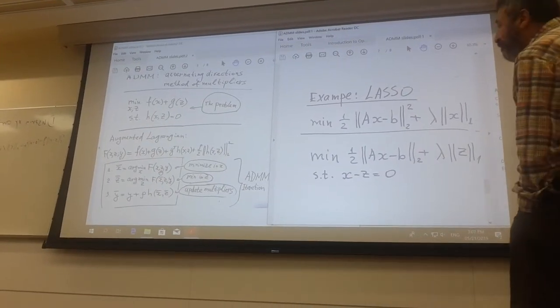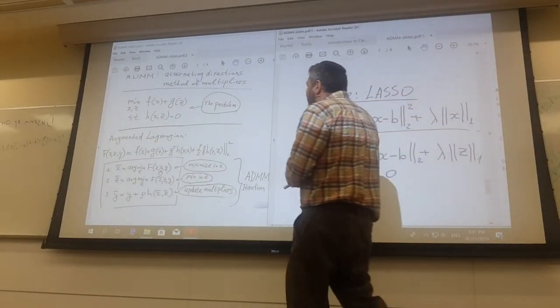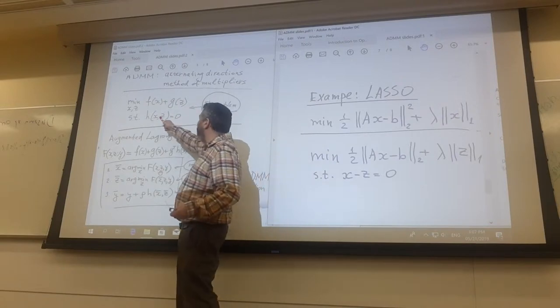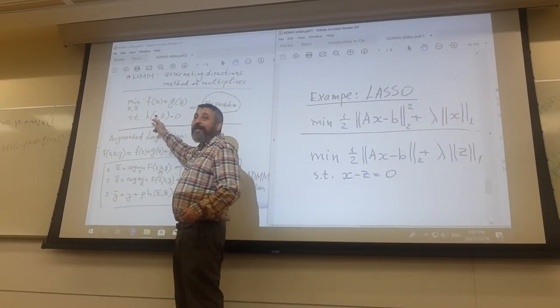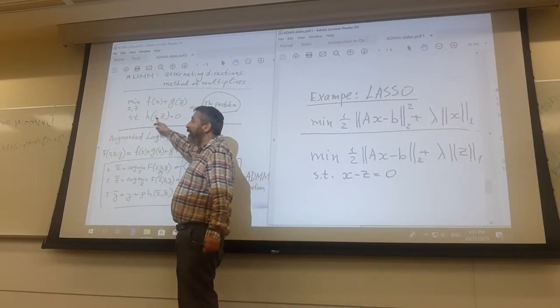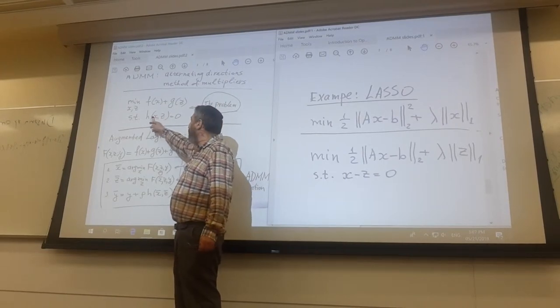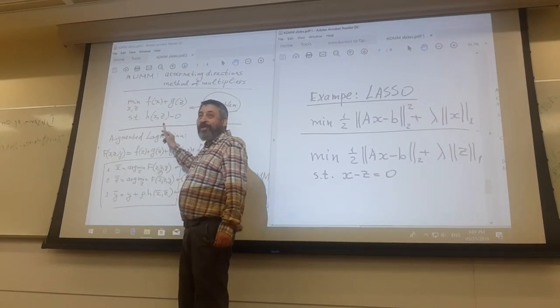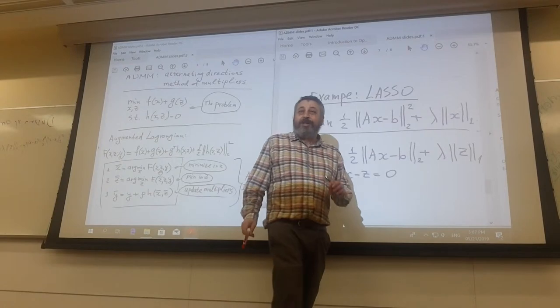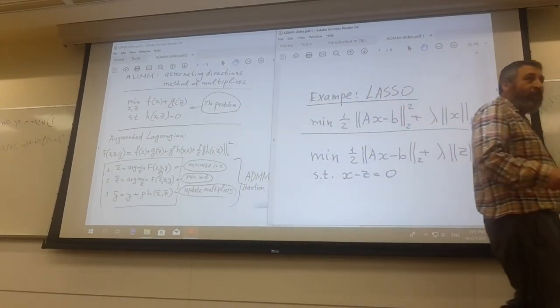There was the question whether this function should be linear. The theory of ADMM and most applications are developed when the constraint is linear with respect to both jointly, X and Z.